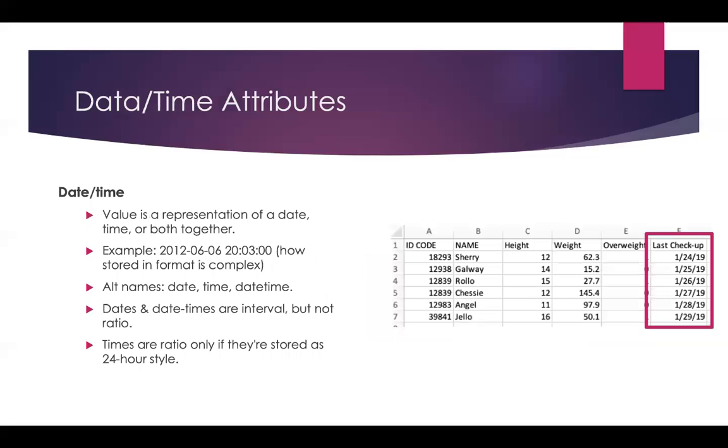Date and time attributes are those which show dates and times. Pretty simple. Here we have the last checkup date, for instance, for these pets. In a GIS, it is common to have a date and time field for when the point, line, or polygon was added to the data set, or when that thing became in existence.